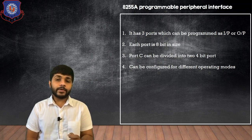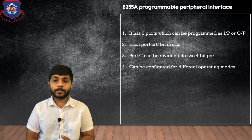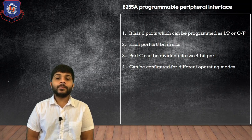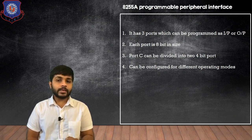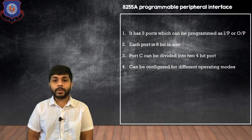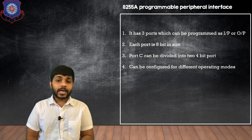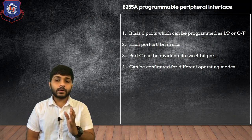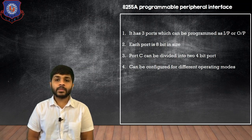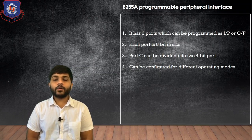The 8255A has three ports which can be programmed as either input or output. The names of these three ports are Port A, Port B, and Port C. Each port is 8 bits in size. If you want to use a 4-bit port, you can use Port C because it can be divided into a 4-bit port. These ports can be configured in different operating modes, and we will see how to configure the 8255A in those different operating modes.